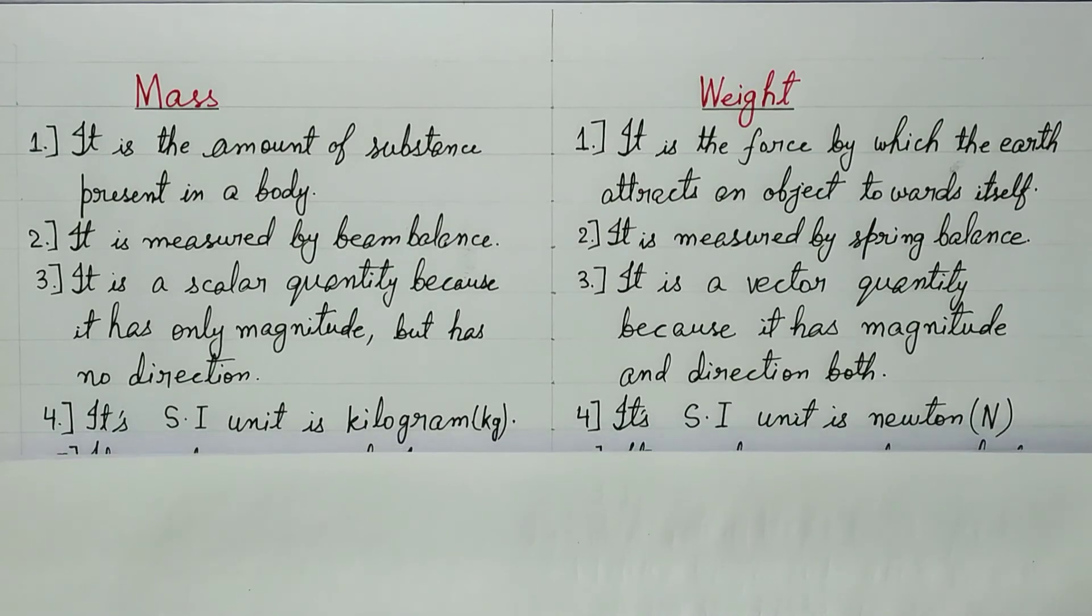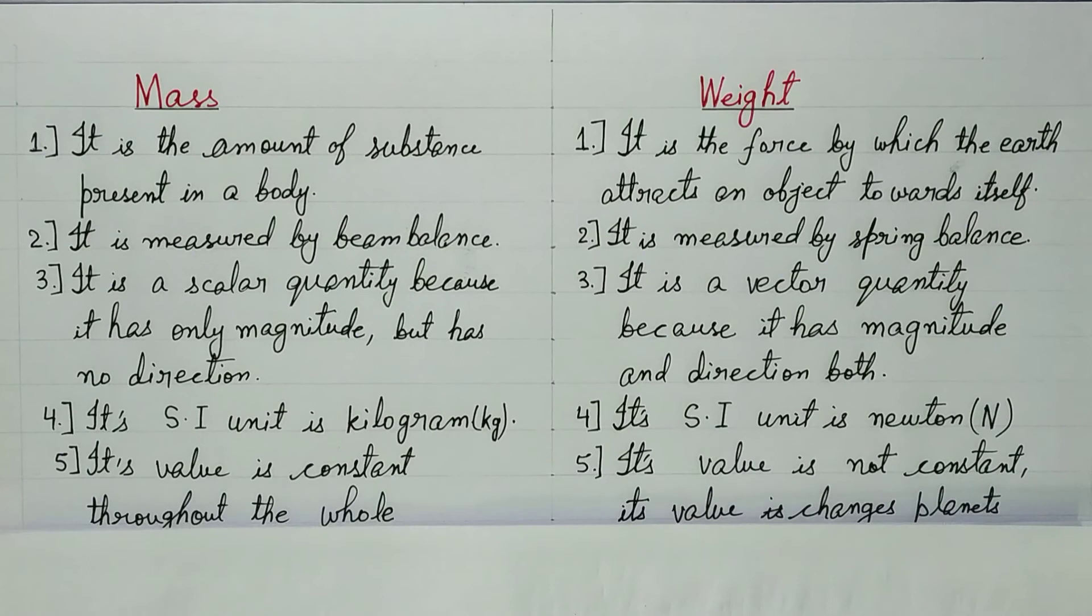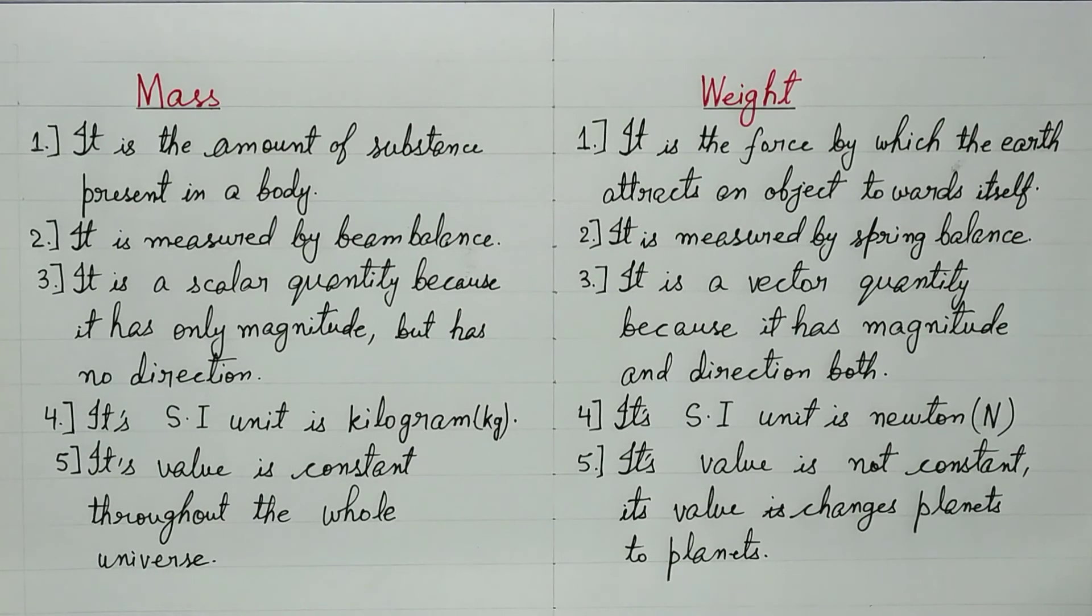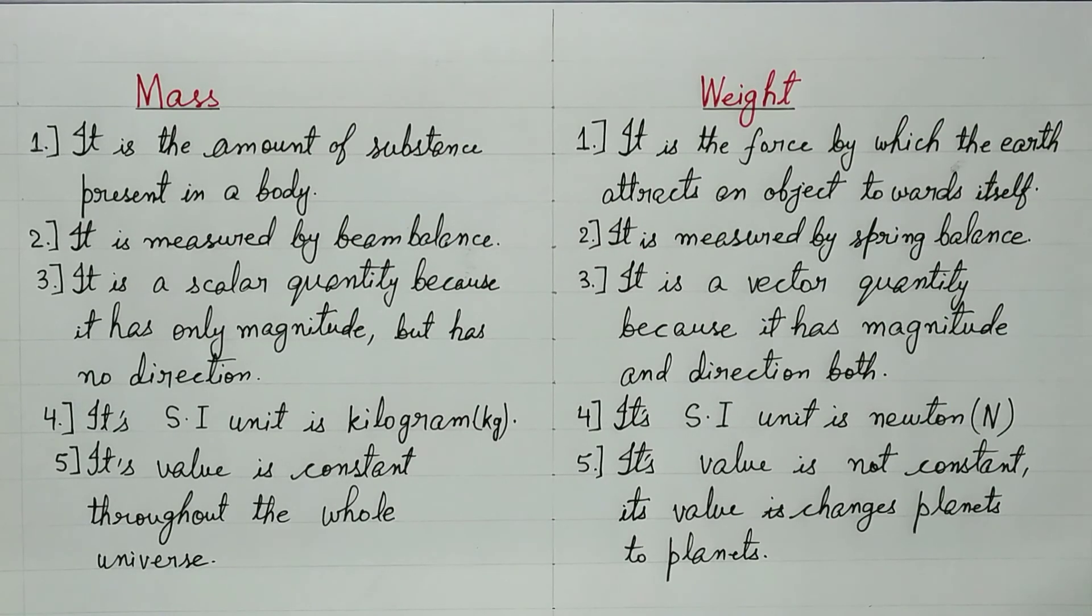Fifth difference. Mass: Its value is constant throughout the whole universe. The value will not increase or decrease. It will be equal on each planet because it is the amount of substance. Weight: Its value is not constant. Its value changes from planets to planets.